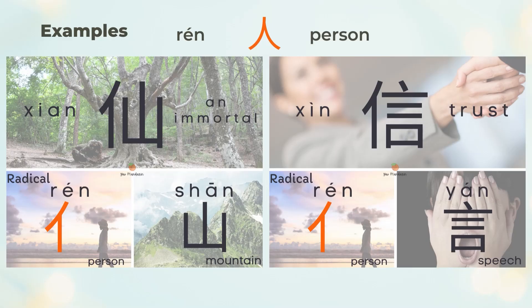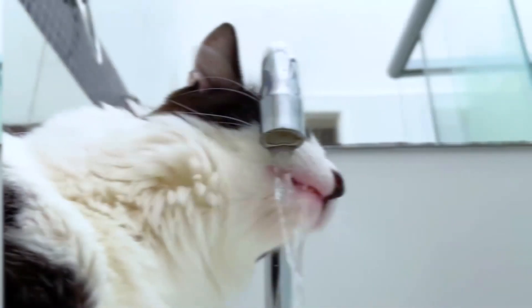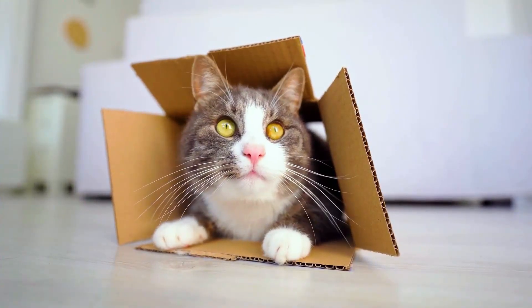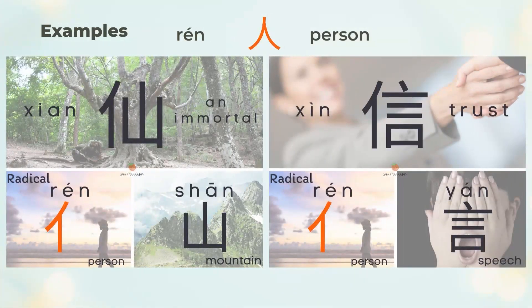You may imagine 仙 as someone who has been sitting under a waterfall or hiding in a cave to become an immortal. 信 means to trust or a letter. 信 is the left 人 (person) and the right 言 (speech). To trust or a letter relates to a person's speech. 言 is another Chinese radical that will be introduced later.